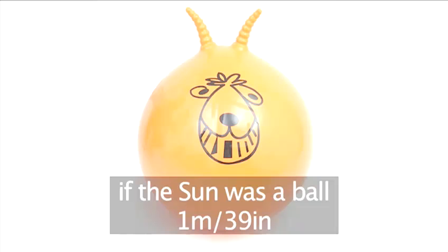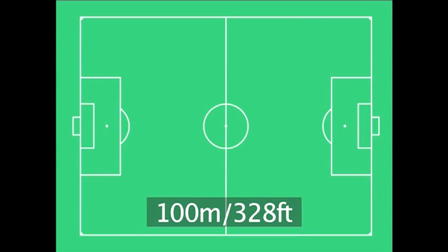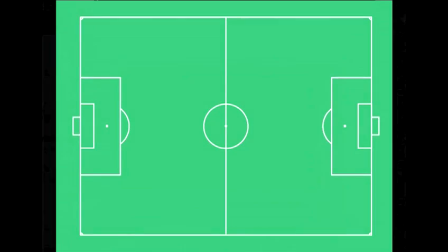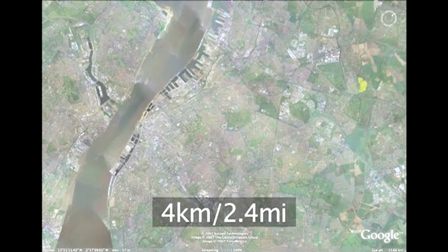If the sun was a ball one meter across, then the earth would be a garden pea over 100 meters away, and Pluto would be a grain of rice four kilometers, or one light day from the sun.